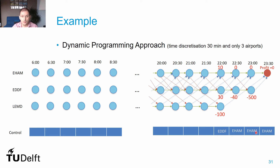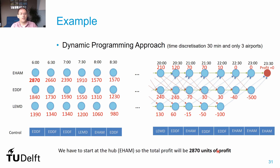A control array stores the optimal decision from each hub state at each time step — specifically, where to fly to capture the maximum profit. For example, the control array indicates flying to Frankfurt at a given time step yields 10 monetary units, while subsequent time steps recommend staying in Amsterdam. We continue moving backwards, computing profits for each network node until reaching the beginning of the day, producing a full profit map.